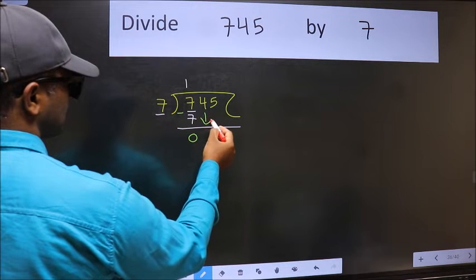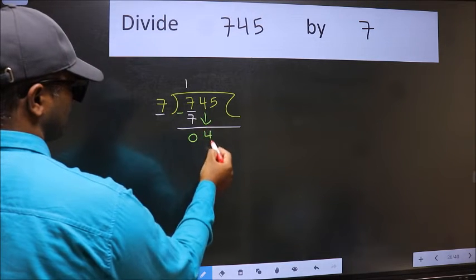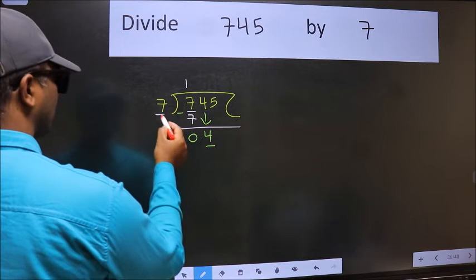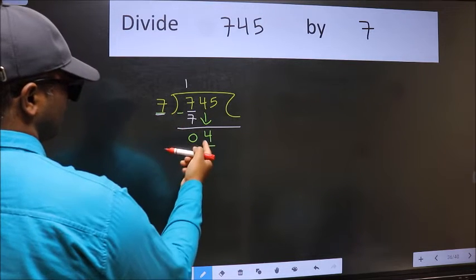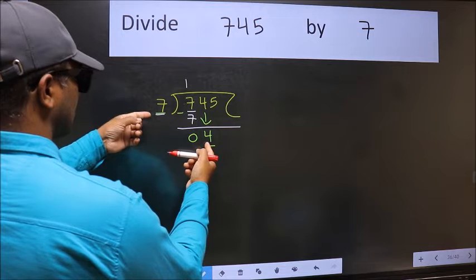After this, bring down the next number. So 4 comes down. Now here we have 4 and here 7. 4 is smaller than 7.